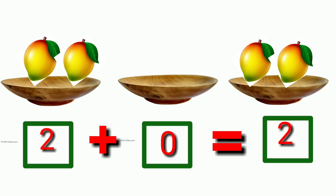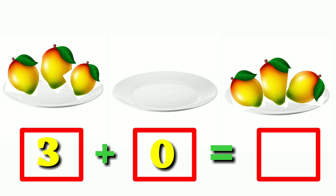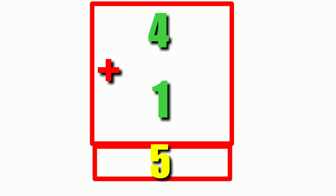Three mangoes plus zero mangoes is equal to three mangoes. For better understanding, we can also add numbers vertically.